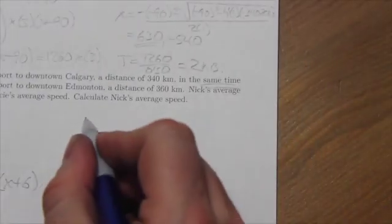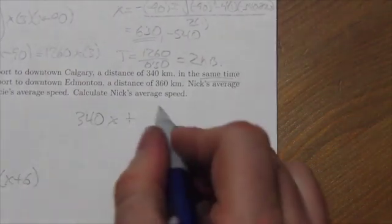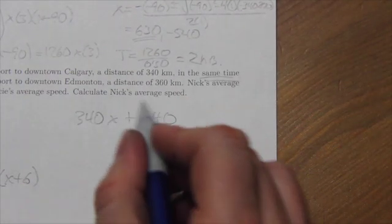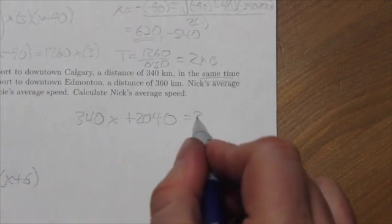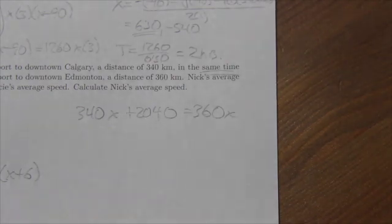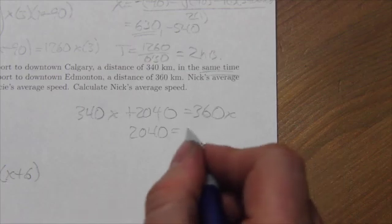So now we come up here and that's going to be 340X plus, okay, well 340 times 6, zero, four, 2040 equals 360X. If you bring the 340 over, we'll get 2040 is equal to 20X.